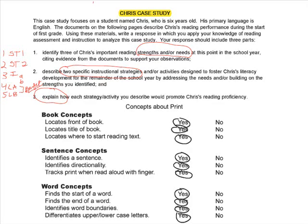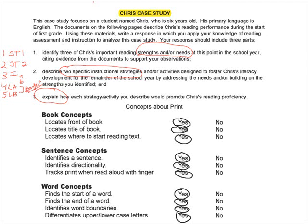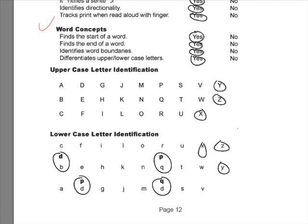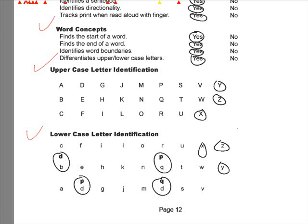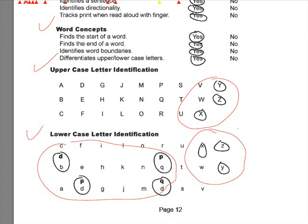Let's take a look at his data. We get the concepts about print data first. We can see that he has book, sentence, and word concepts. Scrolling up to his letter identification, you can see quite plainly that he has most of the upper and most of the lower, with the exception of these infrequent letters — X, Y, and Z in lowercase — and his letter confusions right here. So while we're quite pleased with this progress, we do see that some things are lagging, though we're not going to panic because we expect such things to lag a little bit.